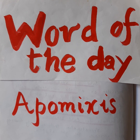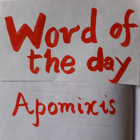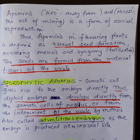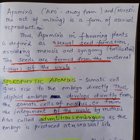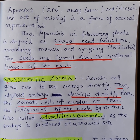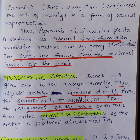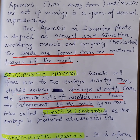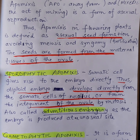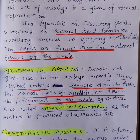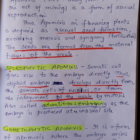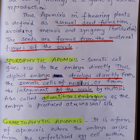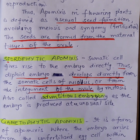Today's word of the day is apomyxis. Apomyxis is a form of asexual reproduction. In flowering plants, it is defined as asexual seed formation avoiding meiosis and fertilization.